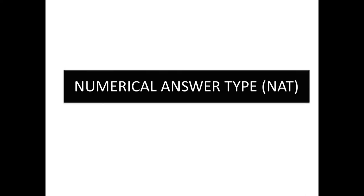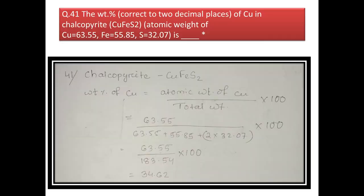Now we begin the numerical section. The first question is: the weight percentage of copper in chalcopyrite, given atomic weights of Cu, Fe, and S. Chalcopyrite has the formula CuFeS₂. The weight percentage of copper is the atomic weight of copper divided by the total molecular weight of chalcopyrite, multiplied by 100. The value comes out to be 34.62%.